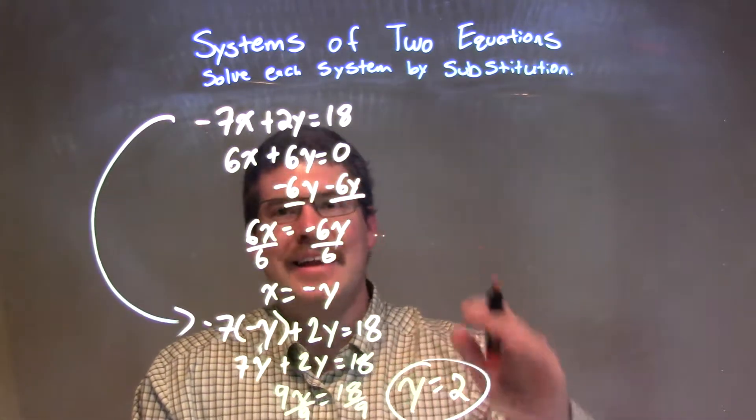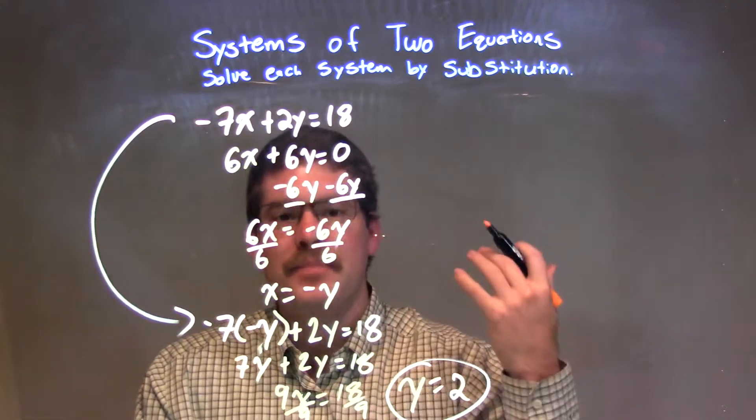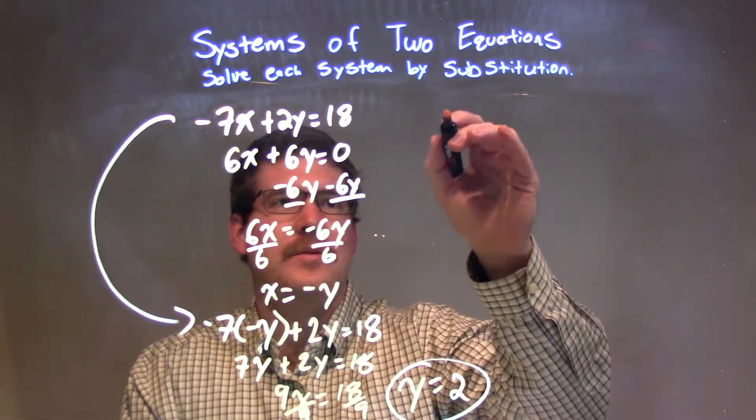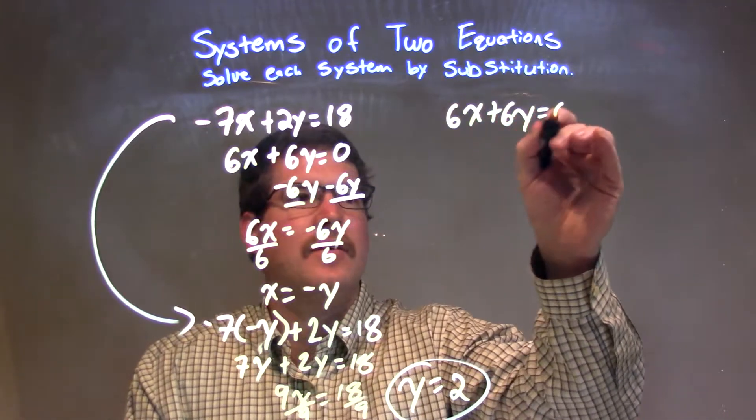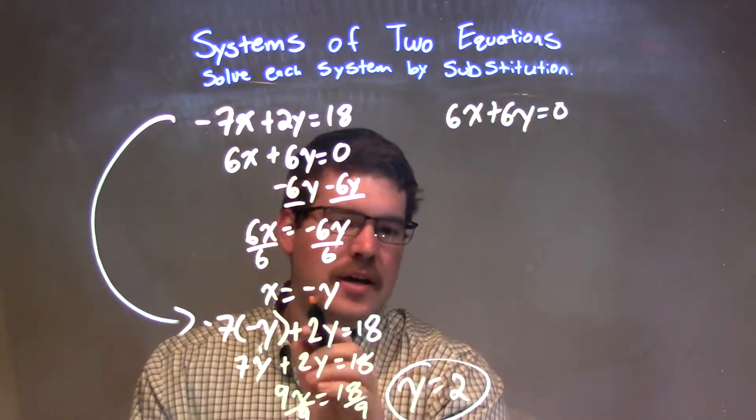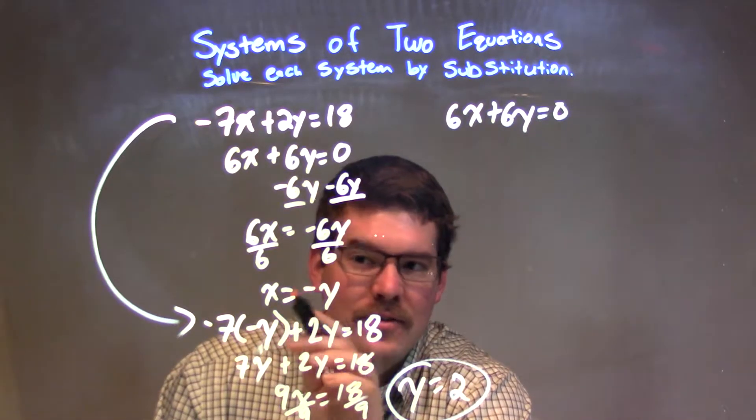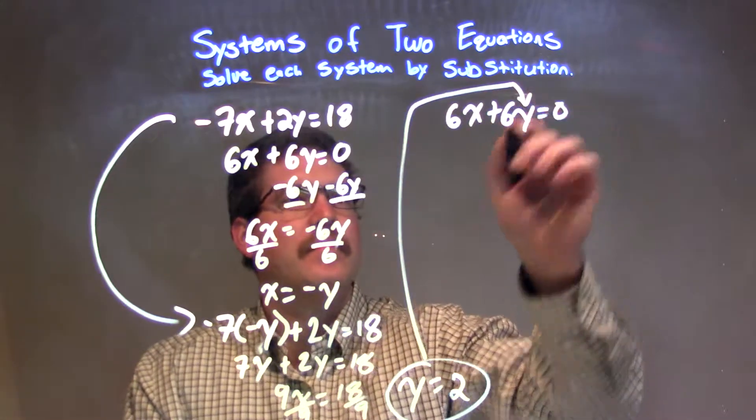Now I'm going to plug that into my other equation, or actually either one really doesn't matter, to try to get my x value. So let's pick our second equation. Let's go with that. Let's see what happens. So we have 6x plus 6y equals 0. Now you might be able to see here, if y is 2, plug it in, we have our x value, so it should be negative 2, but let's see what happens. Let's plug that y equals 2 in.